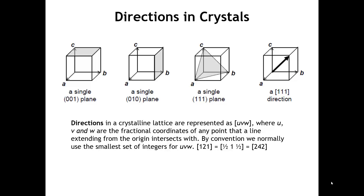Let's talk first about directions. A direction is specified by a vector, and the notation of that vector is going to be the integers u, v, and w inside square brackets. To determine the values of u, v, and w, we take the vector and start it at the origin, then find any point that the vector goes through. By convention, we convert that into typically the smallest set of integers.